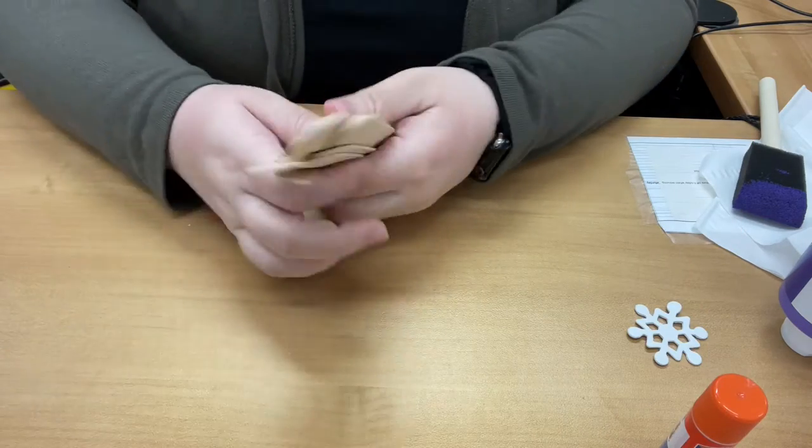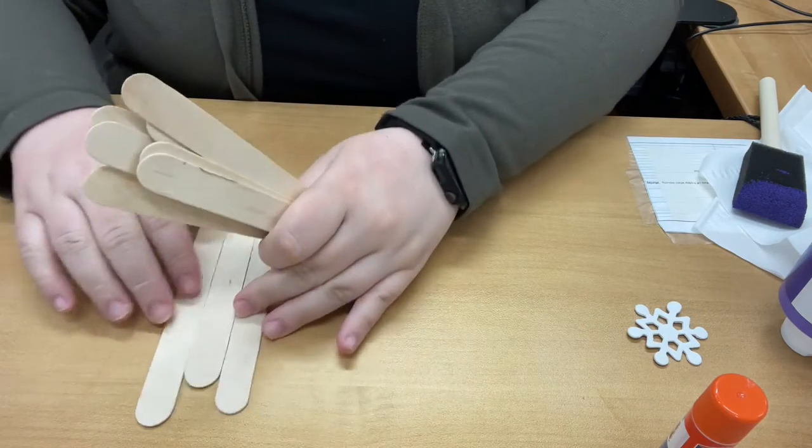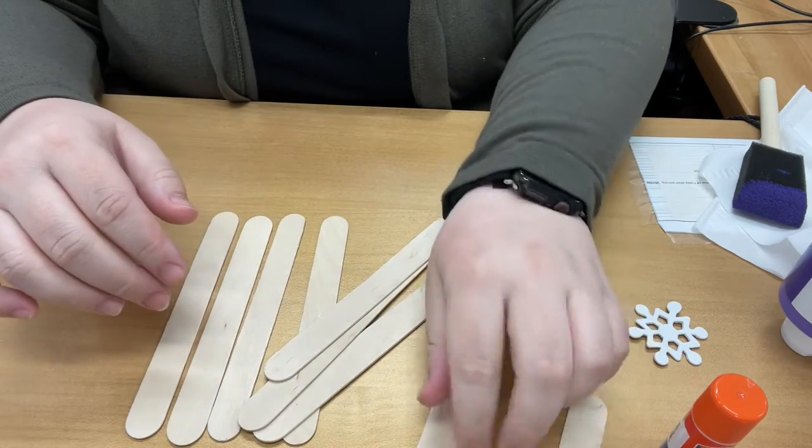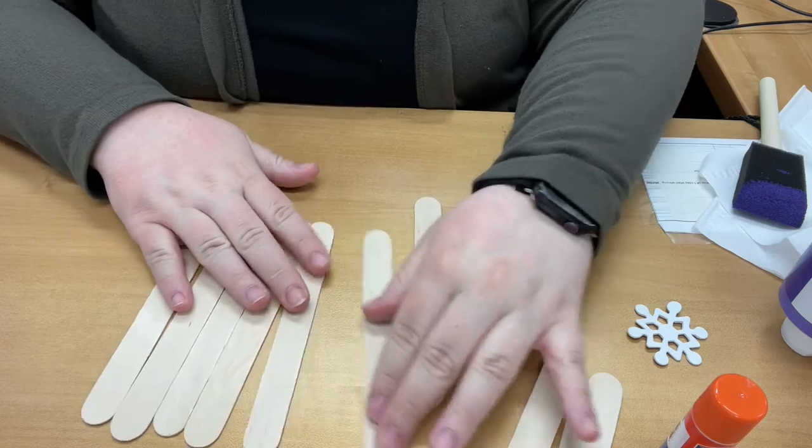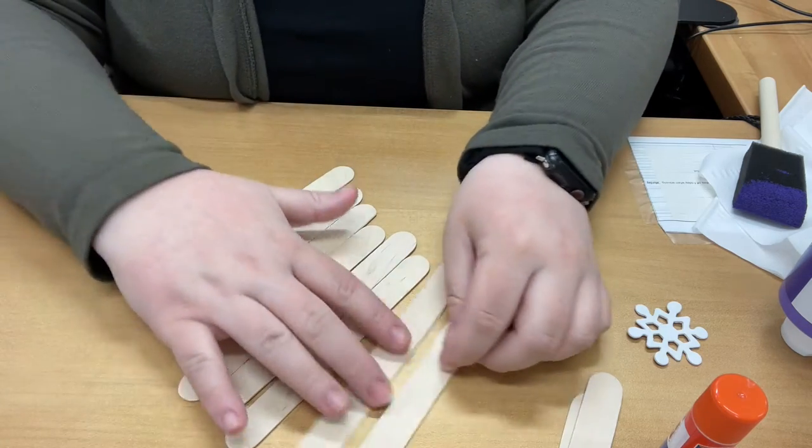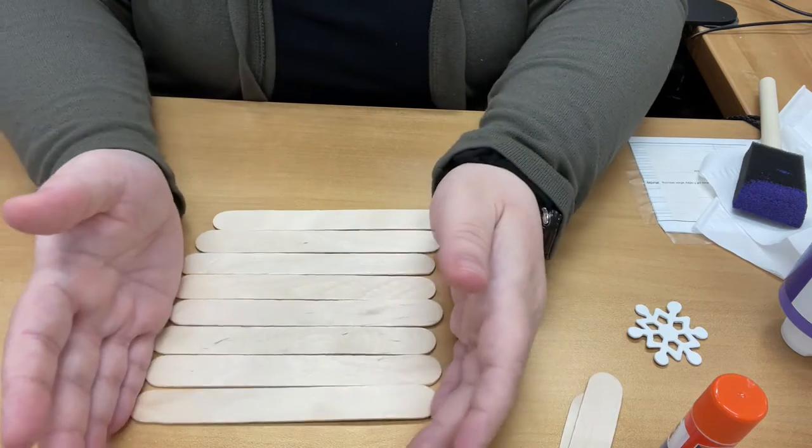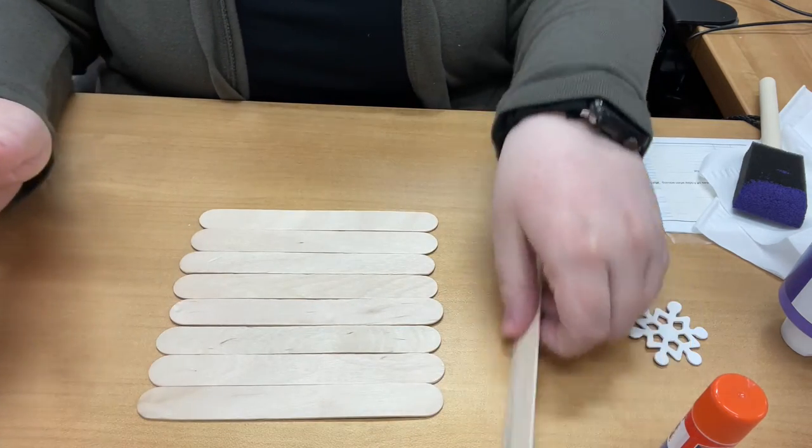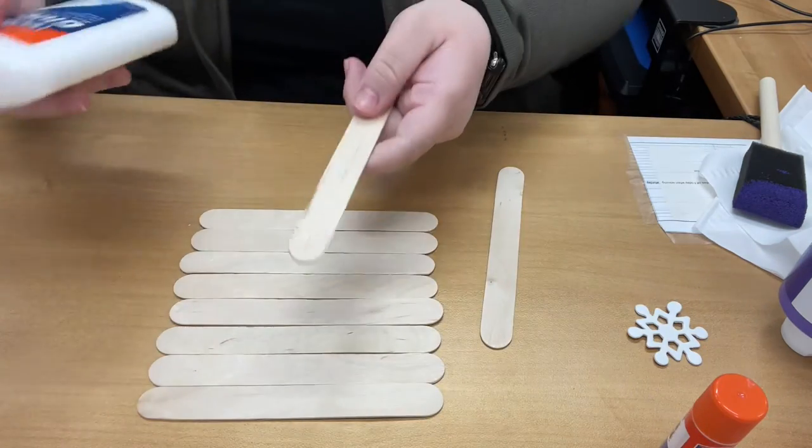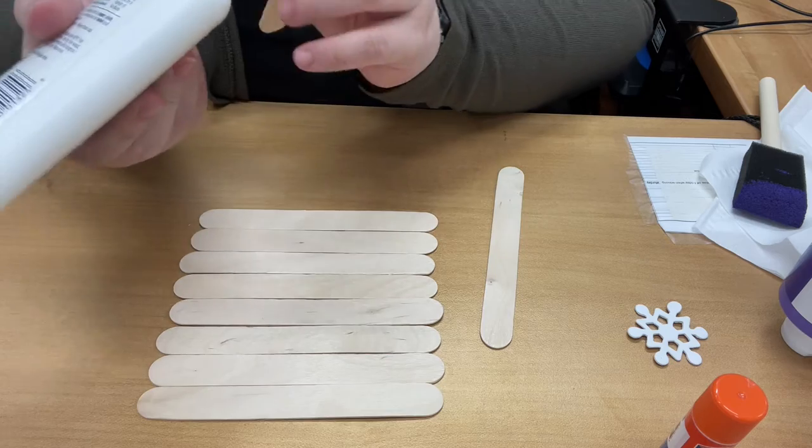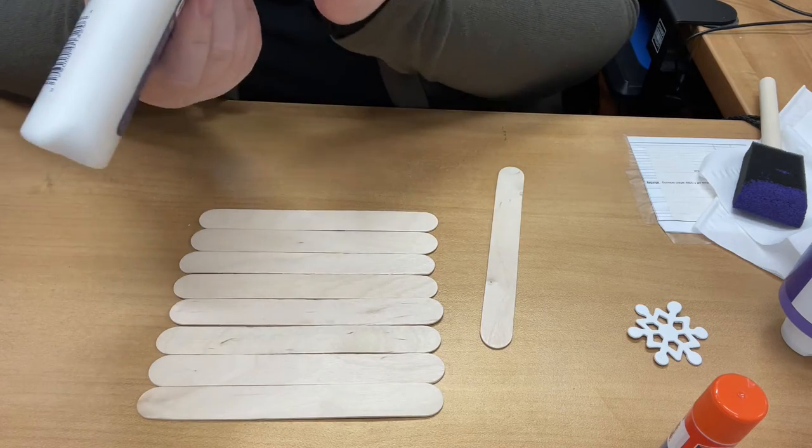So to make your mug you're first going to want to glue your popsicle sticks together. You're going to want most of these minus two to be put in like a square. I think the easiest way to do it is to line them up like this and then we're going to take our liquid glue and put it on the two sticks to the side.